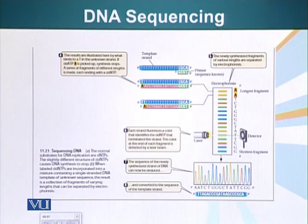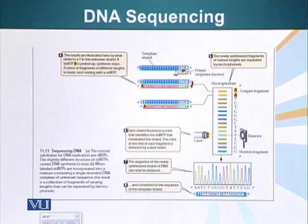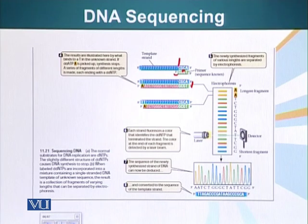Now when we run the reaction, these bases are incorporated at random. Say for example, we had our primer and it was being extended — here the primer has annealed, this is the primer sequence, there is a 3' hydroxyl. The next base added would be the base complementary to this position. So when the base is added, if it is a normal base, it is fine, but if it is one of those special di-deoxyribonucleotide bases attached to a specific color, the reaction will stop right there.